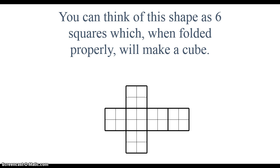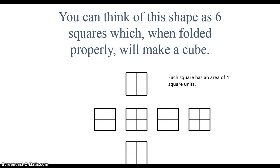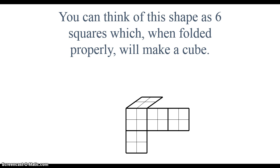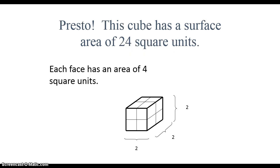You can think of this shape as six squares which, when folded properly, make a cube. There are the six squares — each one has an area of four. And if I were to fold it — presto! This cube has a surface area of 24 square units. Each face of this cube has an area of four square units.